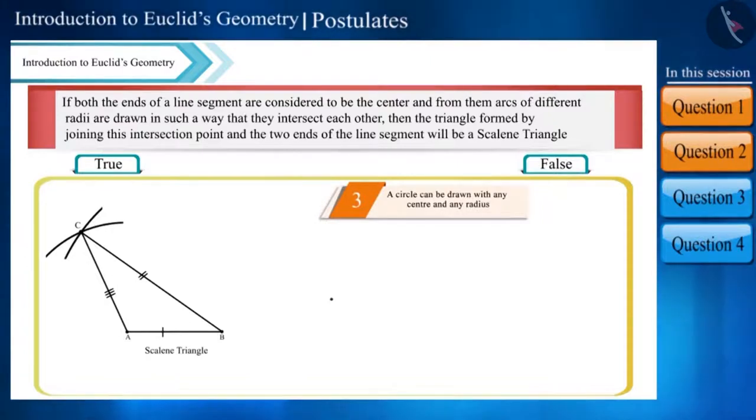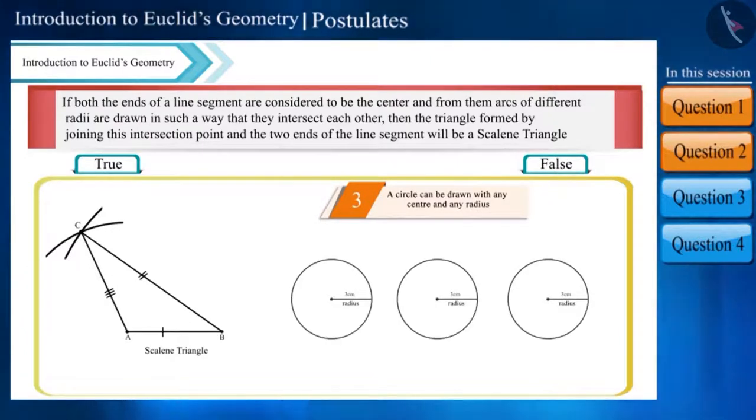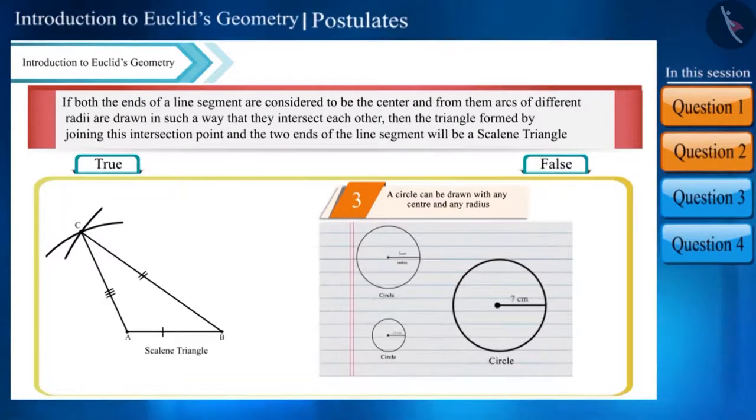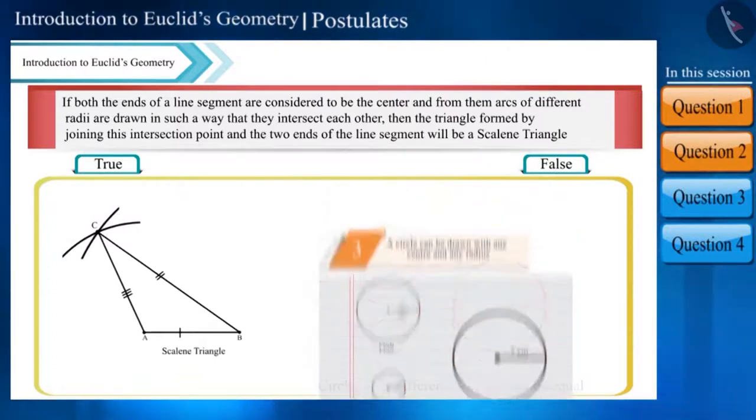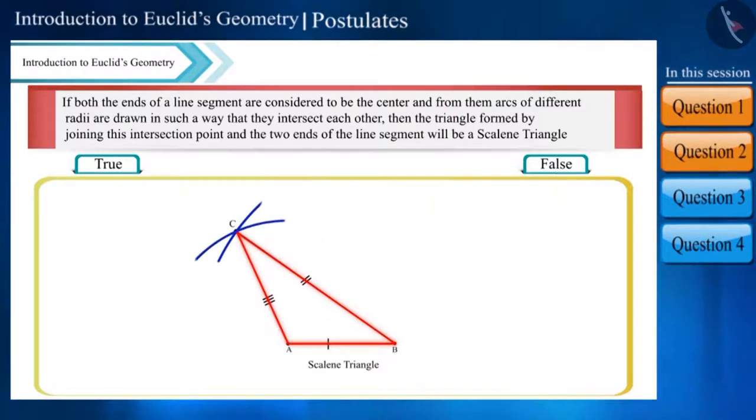Friends, according to the third postulate of Euclid, a circle made with the same radius but with different centers is equal. This means circles with different radii will not be equal. So when we drew arcs with different radii, both the lengths were different, and since the three lengths are different, the triangle formed will be a scalene triangle. Therefore, this statement is true.